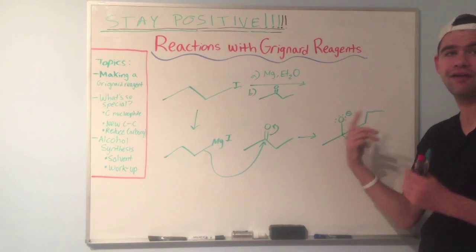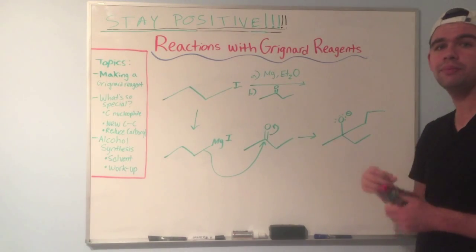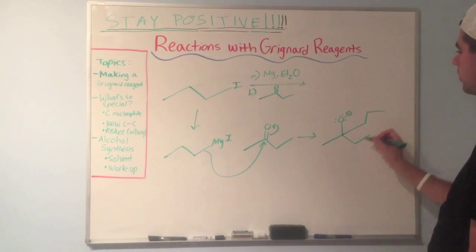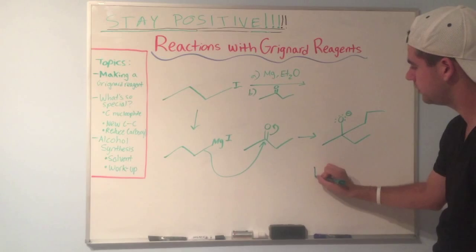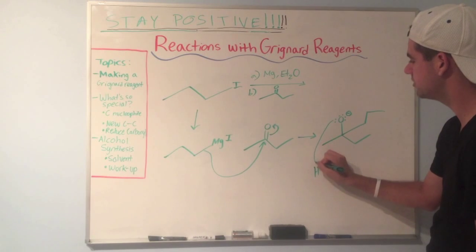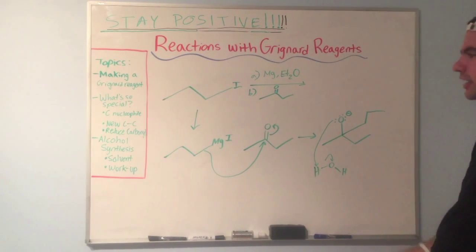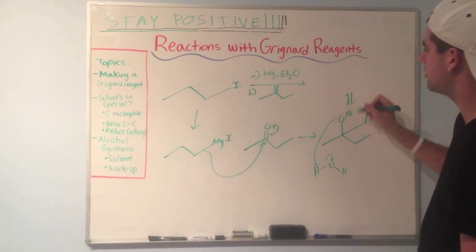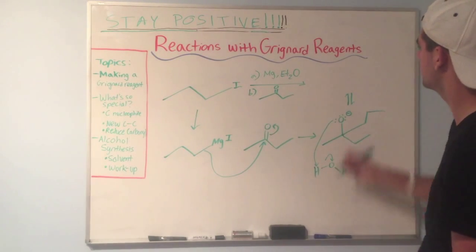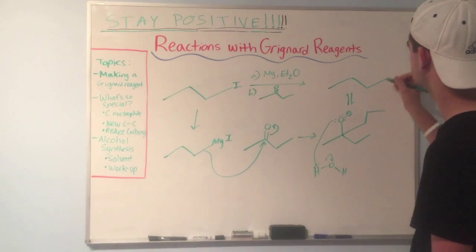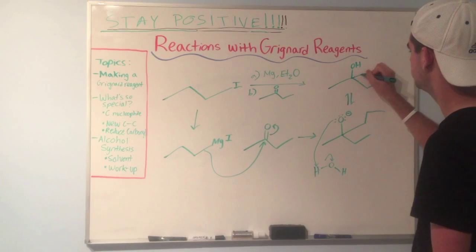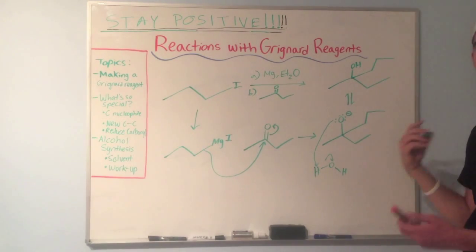So how do we solve the problem of having an unhappy oxygen? We use workup — adding water just temporarily so that we can protonate this oxygen. We introduce water molecules, and the oxygen with the negative charge deprotonates water. That gives us our final product. Our final product is an alcohol — specifically a tertiary alcohol.